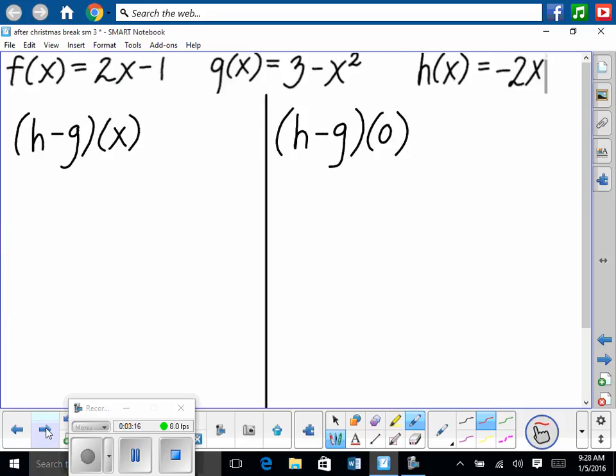Okay. I'm just going to do one subtraction one real quick. We'll go through it quickly. (h-g)(x). The reason I'm doing subtraction is it's a little bit trickier. You've got to be a little bit careful. So really we're just doing h(x) - g(x). So h(x) is -2x. And then minus g(x). Now this is where most students make the error. We're subtracting all of g(x), right? So we have to put g(x) in parentheses. g(x) is that. So we have 3 - x². Does everybody see why I put parentheses around that? We're subtracting all of g(x), right?